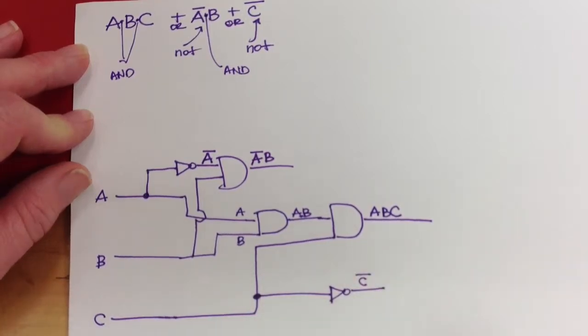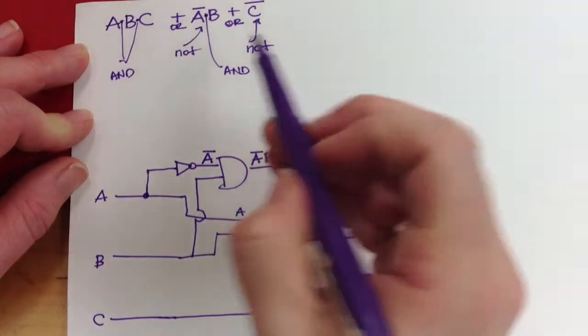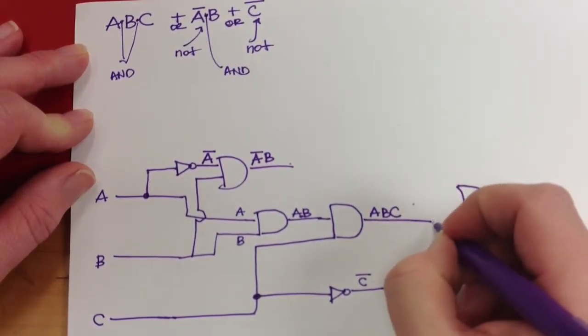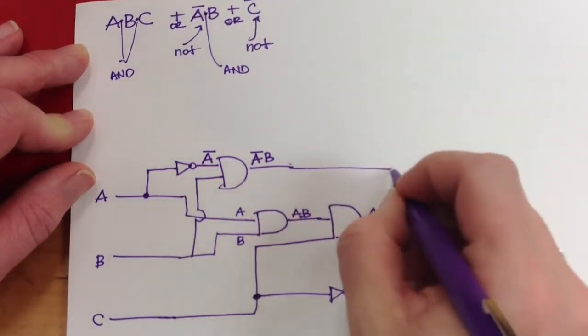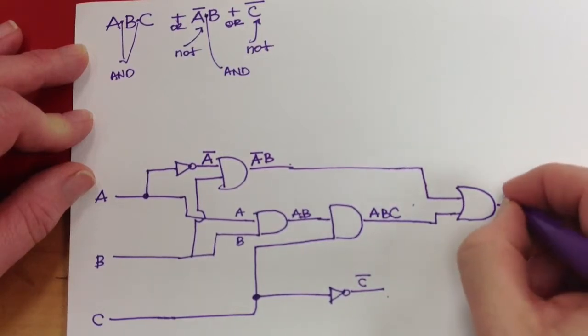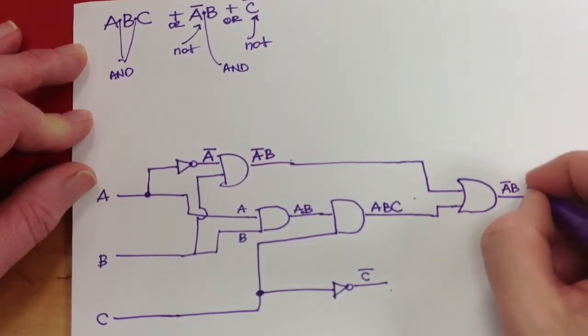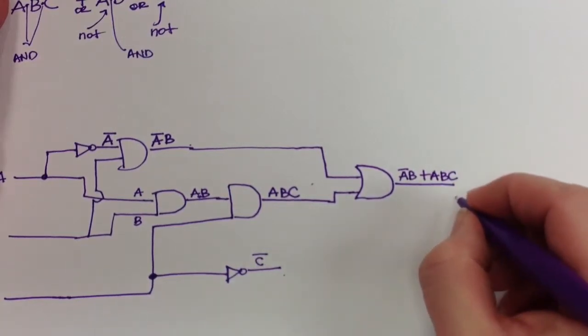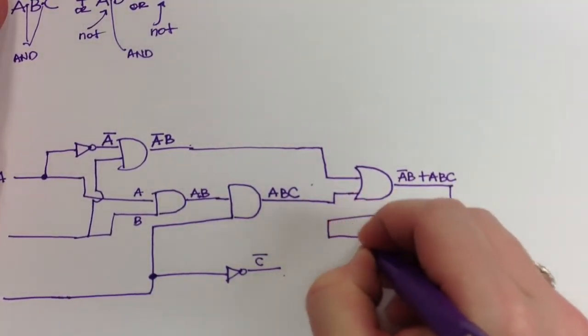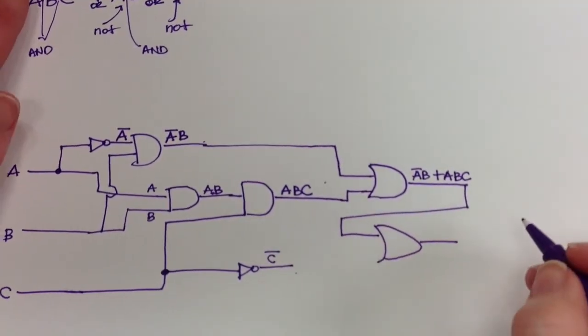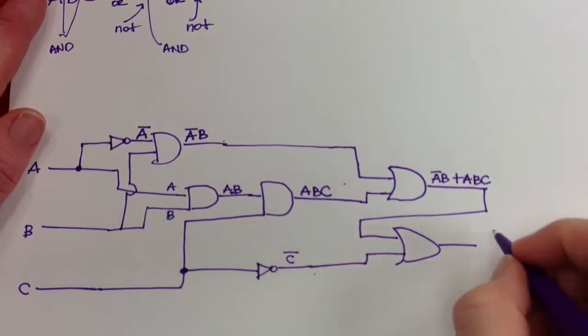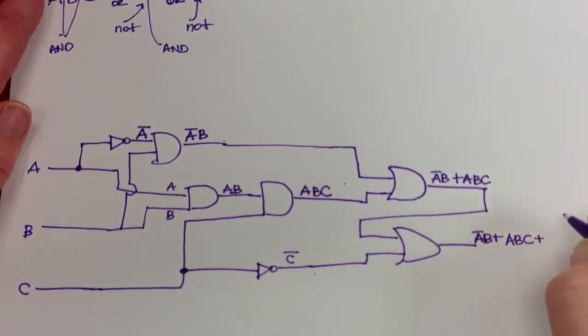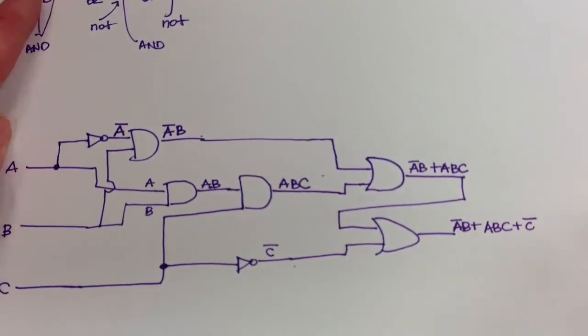So now I have to join this piece, this piece, and this piece with these OR gates represented by the plus sign. So I can go here into my OR gate, and here into my OR gate, and I've made NOT A and B or A and B and C, and NOT C as my final output.